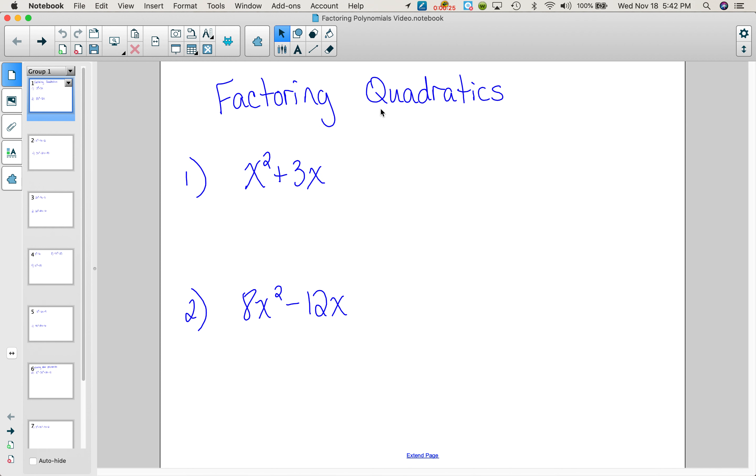So right here, first problem, is there a GCF? Yes, there's an x in each term. Remember terms are separated by plus or minus signs. This is a binomial because there's two terms. So when I factor this, I can factor out an x, it's just the distributive property backwards, and I'm left with x plus 3. That is done. It is factored. There's nothing else to do.